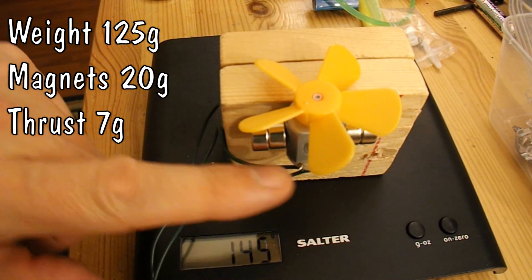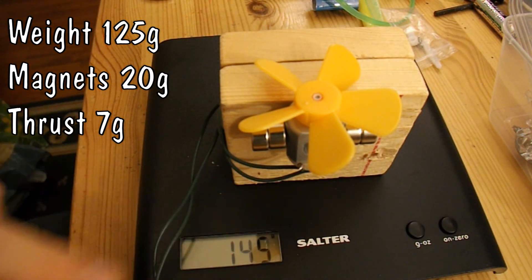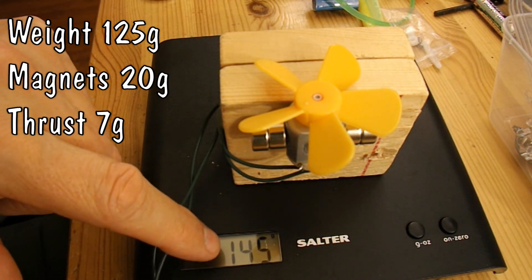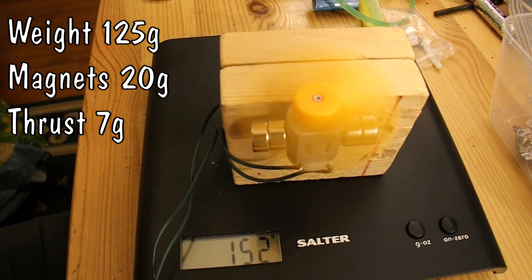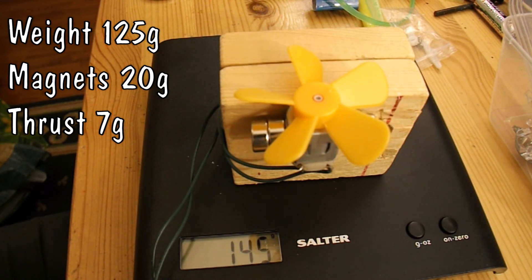I've now doubled the neodymium magnets on each side, so we're now weighing 145g. We're going up to 152g. So that's about 7g of thrust.